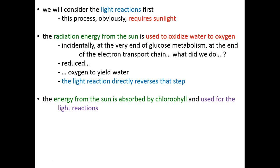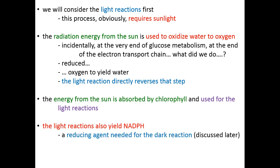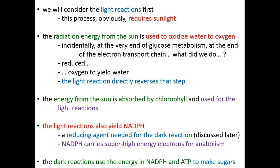The energy from the sun is absorbed directly by chlorophyll, a photosynthetic pigment that drives the light reactions forward. The light reactions yield high-powered electrons, which are carried by NADPH — our specialized super high-energy electron carrier. The electrons from water are so high-energy that we need NADP to carry them. This NADPH will be used in the dark reactions as a potent reducing agent, transferring energy to build glucose. We'll also need ATP for the dark reactions, which are very energy-intensive.